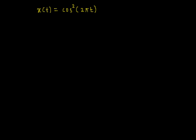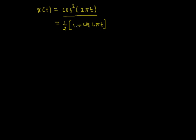Welcome to the video lecture on examples of periodic and aperiodic signals. In this video we'll consider a continuous time signal x(t) = cos²(2πt). The task is to determine whether this signal is periodic or not, and if periodic, what is the fundamental period. cos²(2πt) can also be written as ½(1 + cos(4πt)). We can compare this signal with the standard signal cos(ωt).